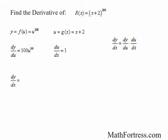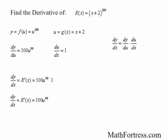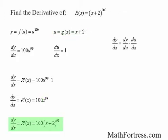So dy over dx equals the derivative of r of x, which is 100 times u to the power of 99 times 1, giving us dy over dx equal to 100 times u to the power of 99. We substitute u with g of x, the inner function, so the final answer is 100 times the quantity x plus 2 to the power of 99. This is the same answer we got using the chain rule in prime notation.